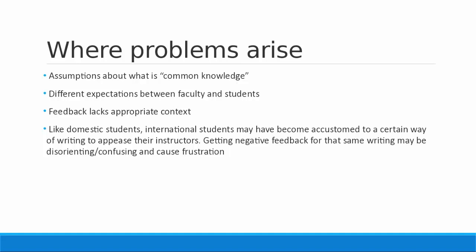We also see this problem with feedback a lot. In the library, we often have students come in asking what their instructor means, or saying they don't understand the feedback. A lot of times you tell them to talk with their instructor more in depth, and then they feel embarrassed because they don't want to bother their instructor with something already given to them. But normally when this happens, it's almost always because feedback is too general or lacks enough context for international students. For someone coming out of a different educational background, we just have to remember that sometimes we need to give a little extra context to the feedback we give students.